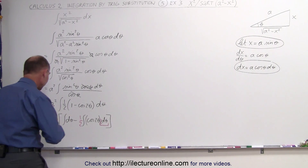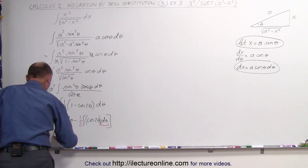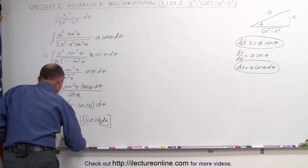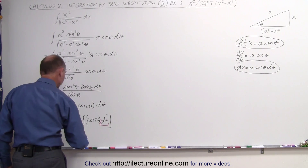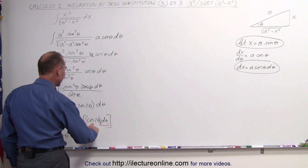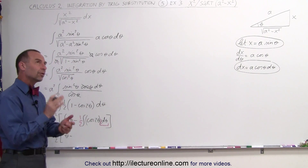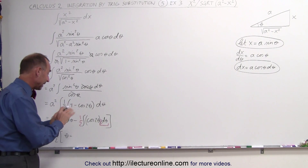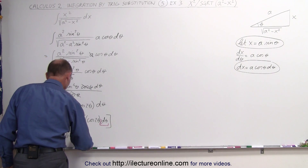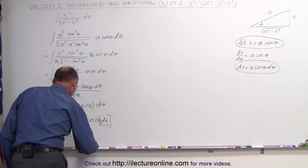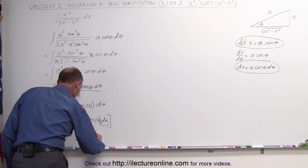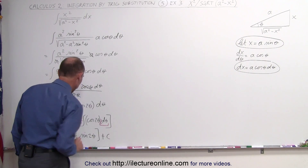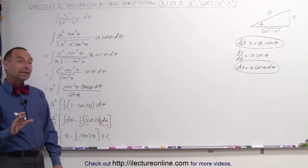The integral of dθ is simply theta. This becomes a squared over 2 times theta, minus — and here we have the integral of the cosine. The derivative of sine is cosine, so the integral of cosine is sine. This gives minus one half times the sine of 2θ, and we have a constant of integration.